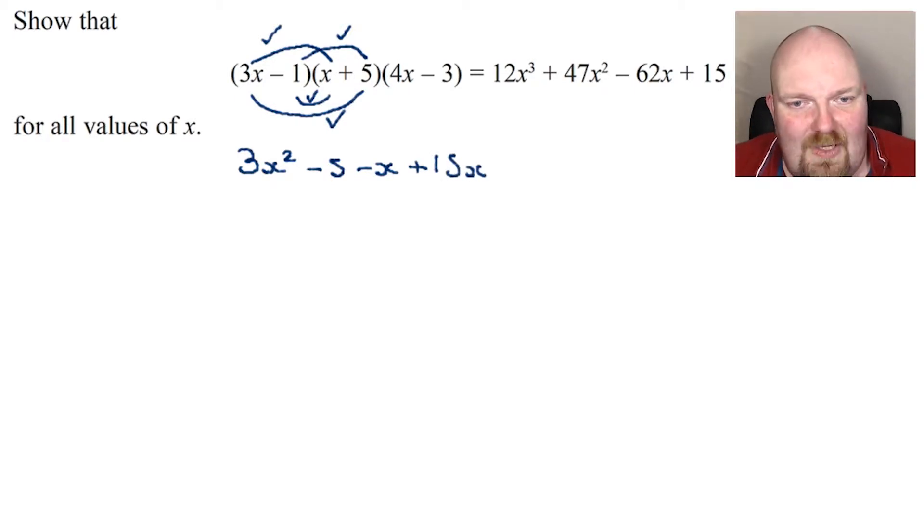So with a little bit of simplifying of this and rearranging them into a more appropriate order, we have 3x squared plus 14x minus 5. So that's these first two brackets sorted. Now I'm going to put those back into brackets because in the question I need to multiply them by the third bracket. So the third bracket is 4x minus 3.